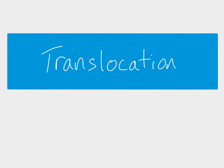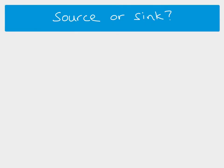This video looks at the process of translocation, which is the movement of assimilates throughout a plant. When talking about translocation, we can identify parts of a plant as being the source or being the sink, but it can vary. Assimilates are substances synthesised by the plant — sucrose is the assimilate we normally talk about — and it moves from the source, where it is synthesised, to the sink, where it is used either for storage or in metabolism.